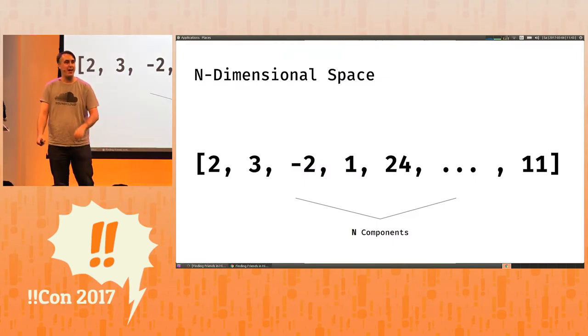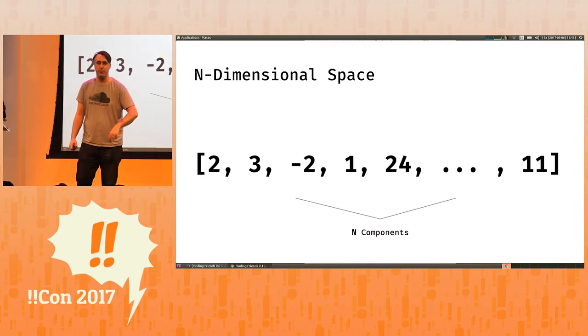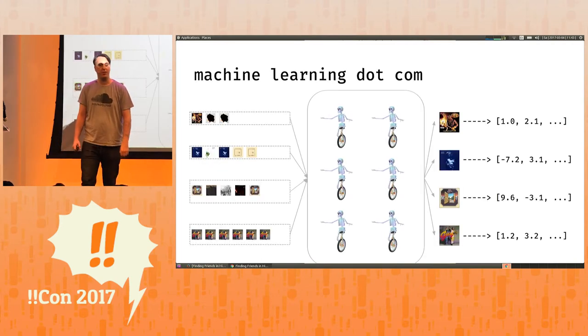If you want to have n-dimensions, you can do this by just having n-components that uniquely describe a point relative to an origin. Now you all know what a vector is, now we can talk about machine learning.